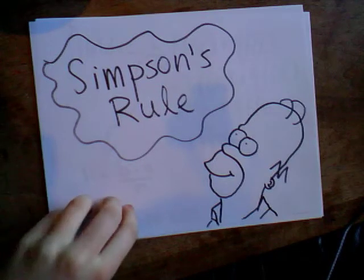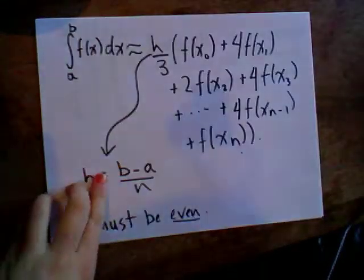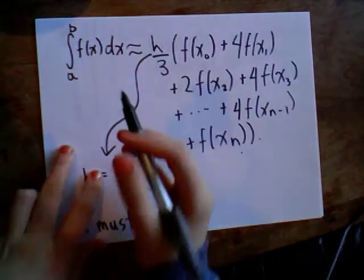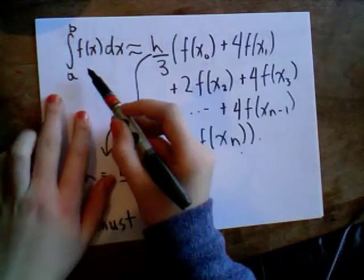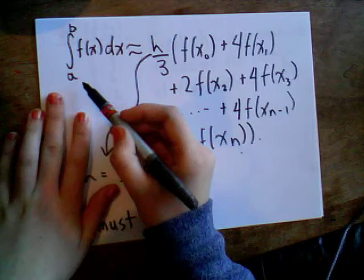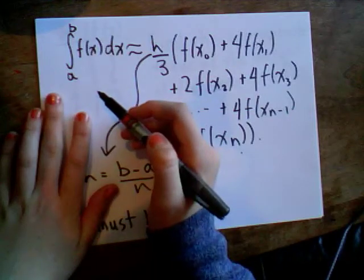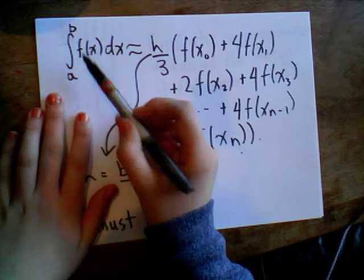Okay, so Simpson's rule is basically a method of finding an integral over some interval. So they'll give you the function f(x) and they'll ask you to find the integral over an interval a to b.